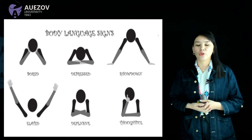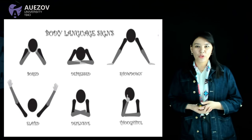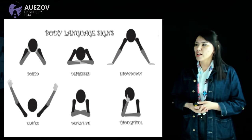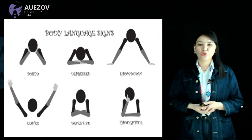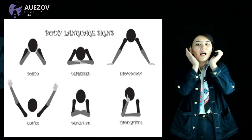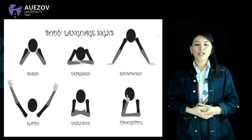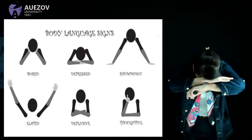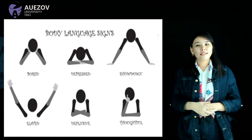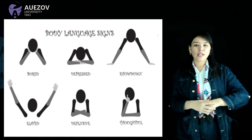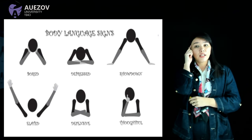The next element of body language is body language signs. You can see these from the presentation, or I can also show — for example, if you are sitting like this, it means you are bored. Or if you are sitting like this, it means you are depressed or stressed.